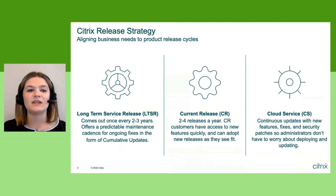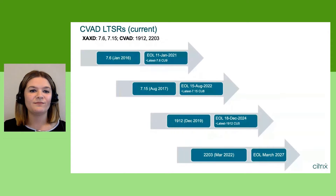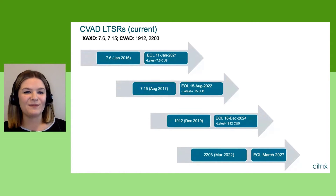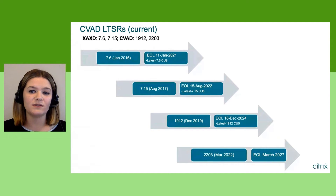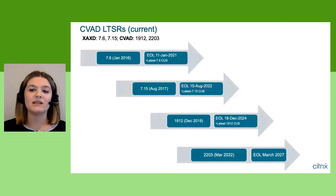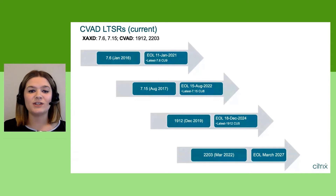We're showcasing both on-premises and cloud features today. For those on earlier LTSRs — 7.15, or even 7.6 — you get five years of support on a long-term service release, with an option to add another five years. The 7.15 ZenApp ZenDesktop LTSR is targeted to reach end of life in August of this year. If you're at an inflection point, now is a great time to move to the 2203 LTSR for the latest features, updates, and patches.